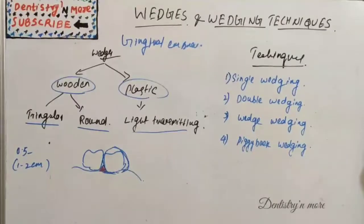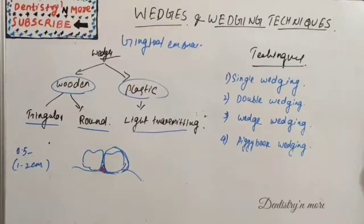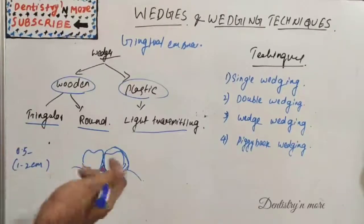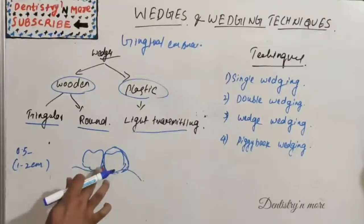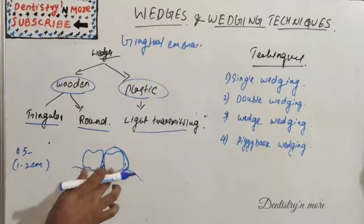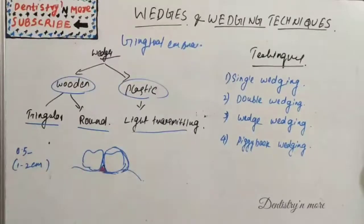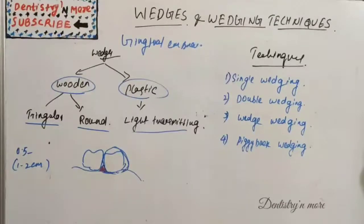A plastic wedge is plastically molded and bent to the shape of the col — the interproximal space. These transparent plastic wedges can transmit light, so they can be used in light-activated restorations.